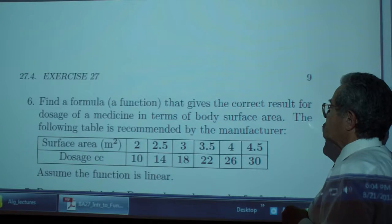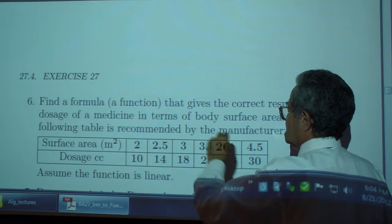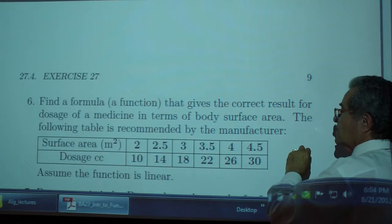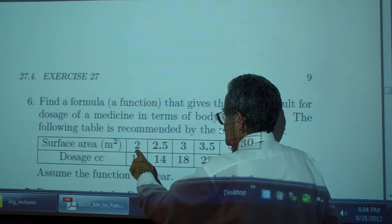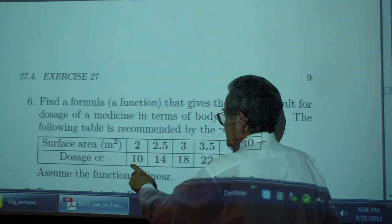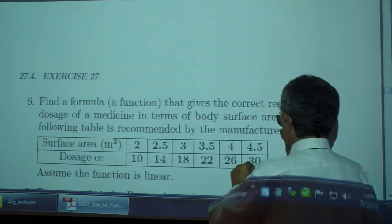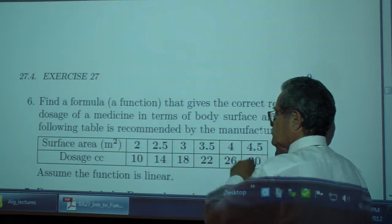Find a formula, a function that gives the correct result for dosage of a medicine in terms of body surface area. The following is recommended. If the surface area is 2 square meters, the dosage is 10 cc, 3, 18, and so on up to 4.5 and 30. Assume this function to be linear.